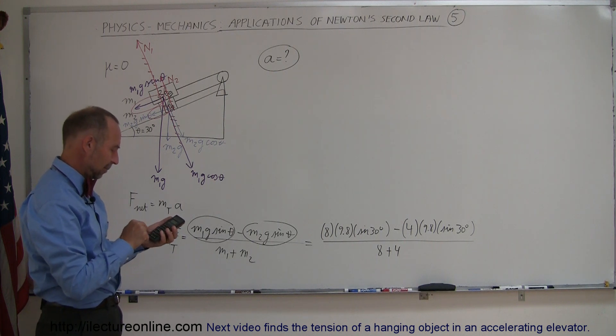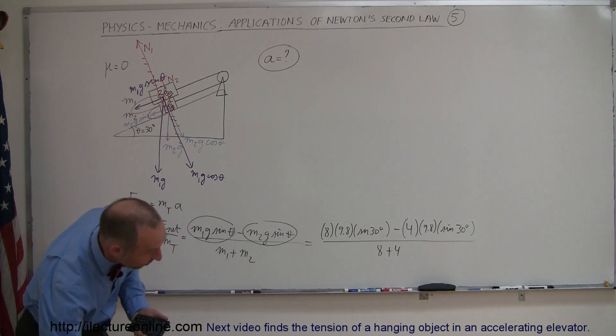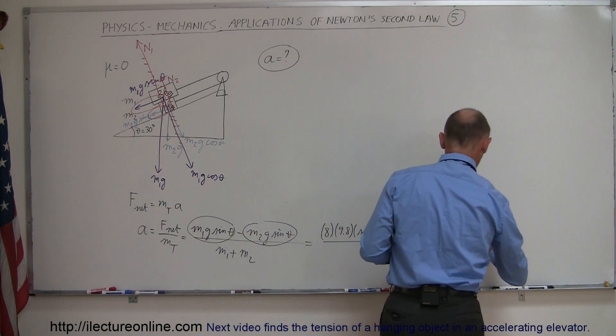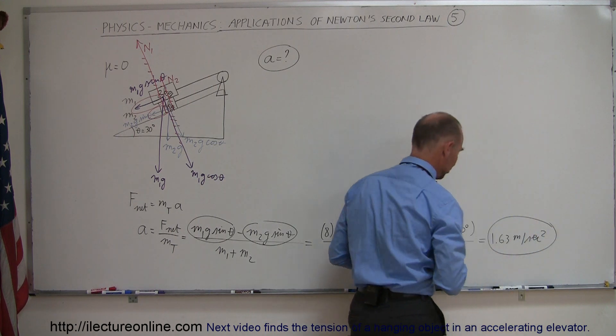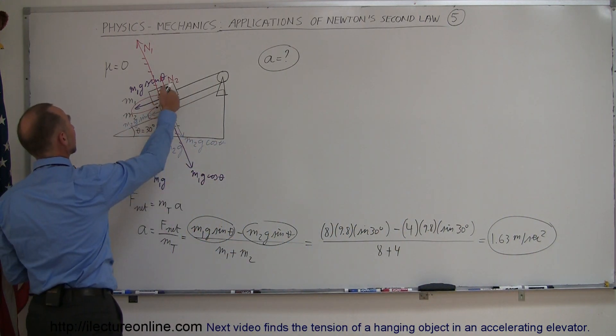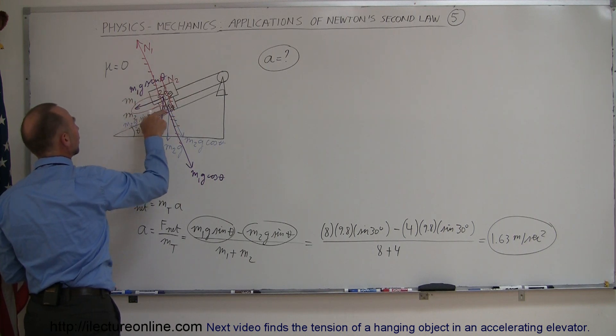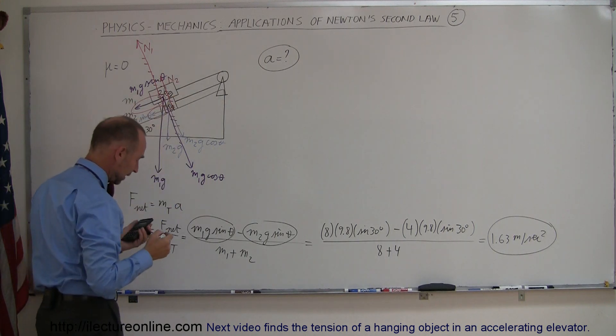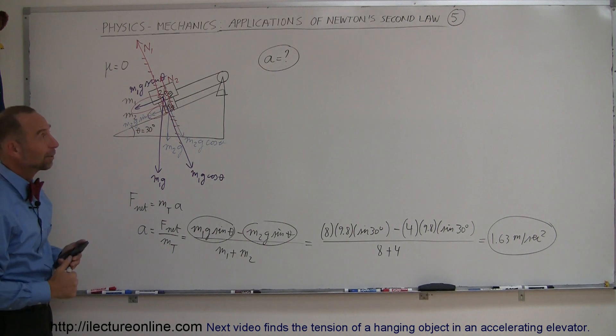So we got 4 times 9.8 times 0.5 divided by 12 and the answer is 1.63 meters per second squared that's the acceleration of the system. Of course what that means is that the 8 kilogram mass will be accelerating downward the 4 kilogram mass will be accelerating upward and that's how you do a problem like that.